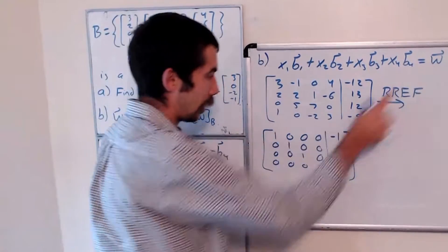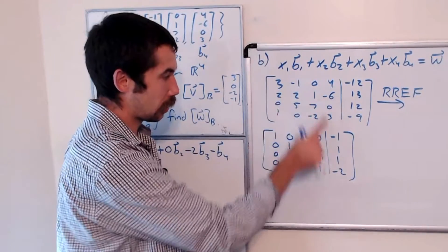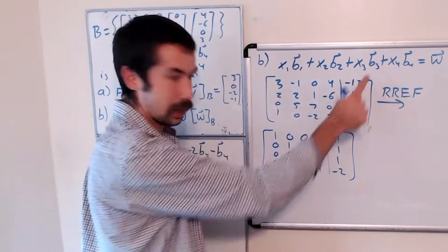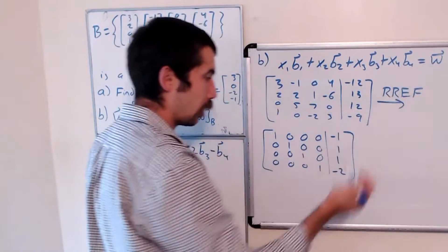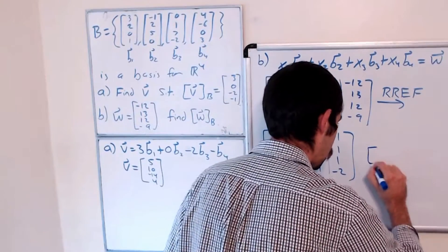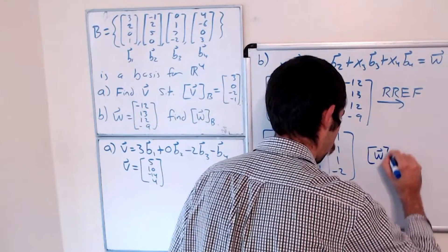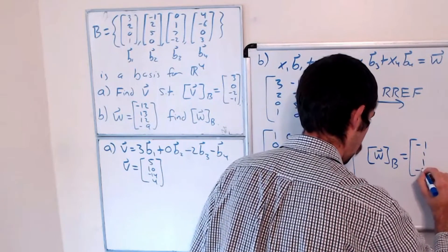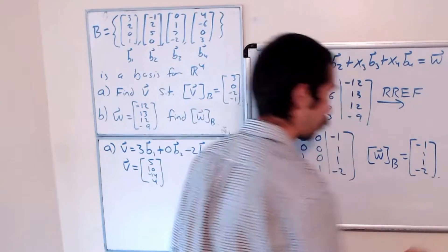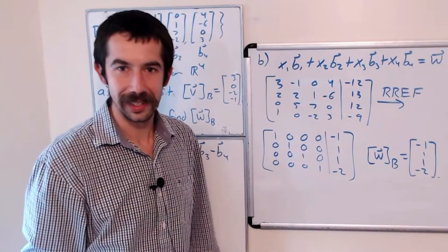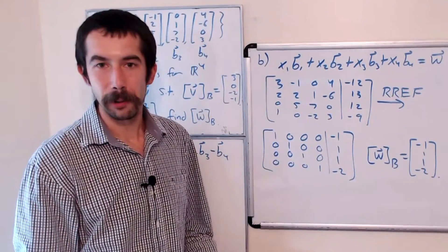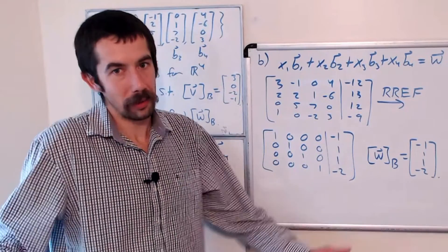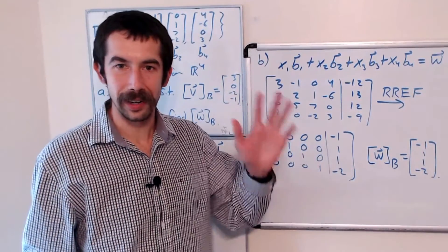From here we know that W equals -1 times B1 plus 1 times B2 plus 1 times B3 minus 2 times B4. Another way to say that is that the B coordinates for W is the vector [-1, 1, 1, -2]. And that's it — not too bad! Good luck studying for whatever linear algebra class you're in. See you later!